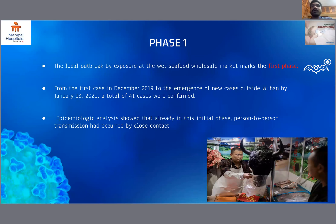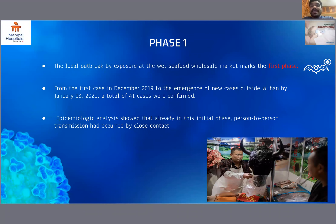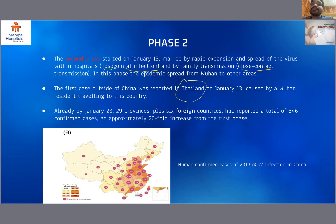In phase one, the local outbreak by exposure at the wet seafood market started the epidemic. From the first case in December 2019 to the emergence of new cases outside Wuhan by January 13th, 2020, a total of 41 cases were confirmed. Epidemiological analysis showed that already in this phase, person-to-person transmission occurred by close contact. Phase two started on January 13th, marked by rapid expansion and spread of the virus within hospitals. Nosocomial infection and family transmission began. The epidemic spread from Wuhan to other areas, and the first case outside China was reported in Thailand on January 13th. By January 23rd, 29 provinces and six foreign countries had reported 846 confirmed cases — approximately a 20-fold increase from the first phase.